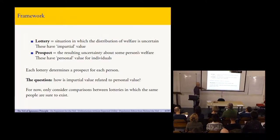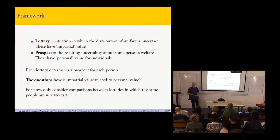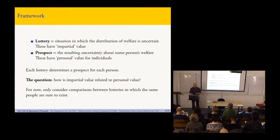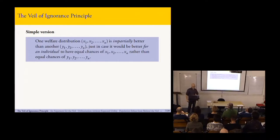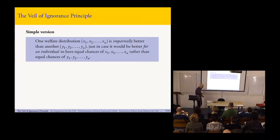Just to make sure we're on the same page: for now, I'm only going to consider comparisons between lotteries with the same people — I just have a bunch of people and I'm considering distributing lotteries among them. I'm working mainly from the slides, and on the handout I've just got kind of highlights in case you want to refer back to them.